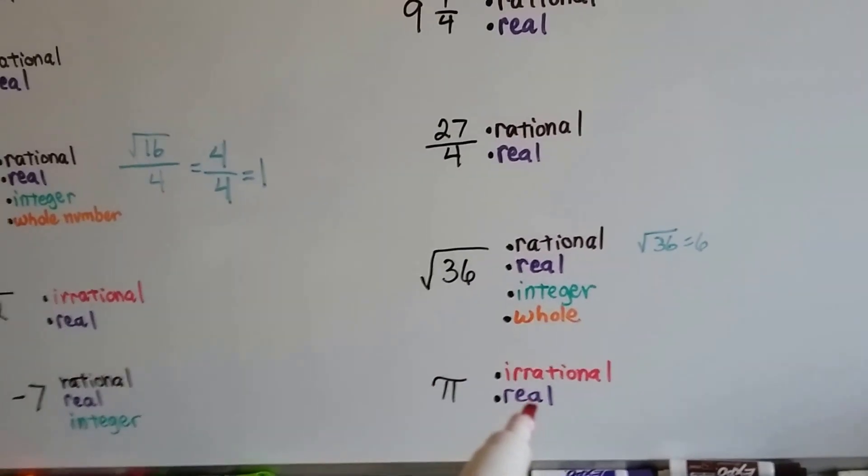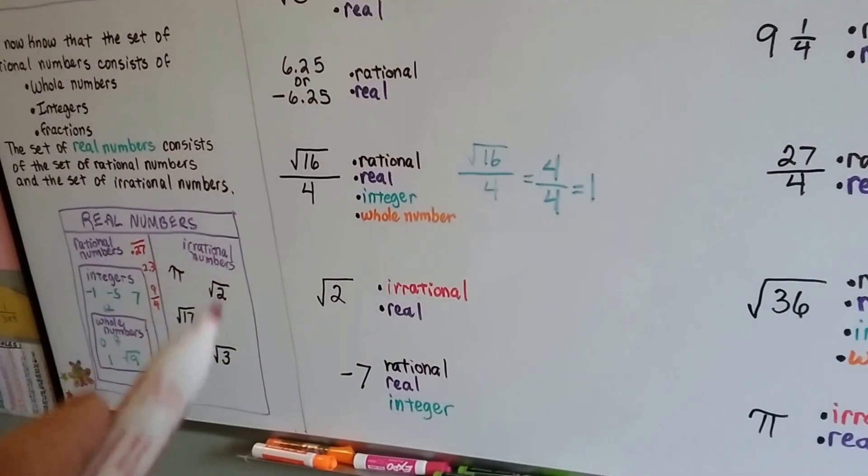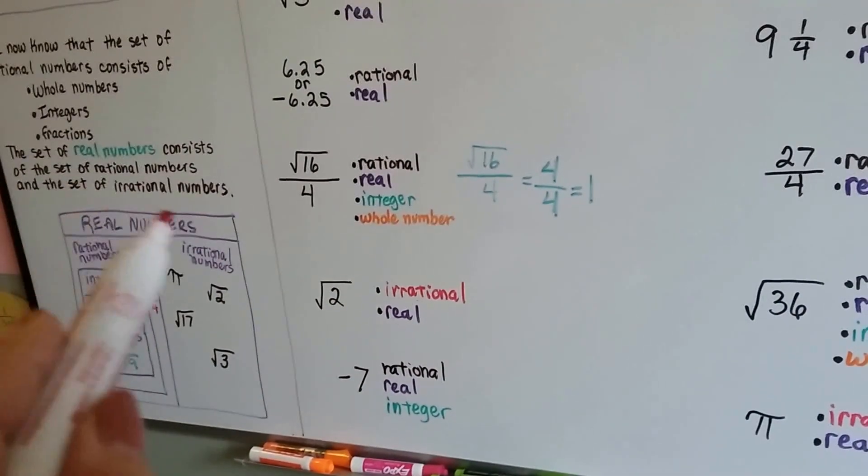Pi. That's irrational and real. It's irrational and part of the real numbers.